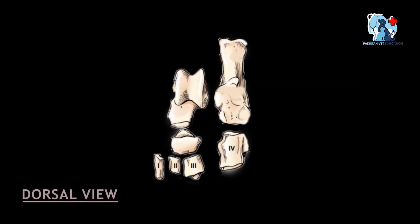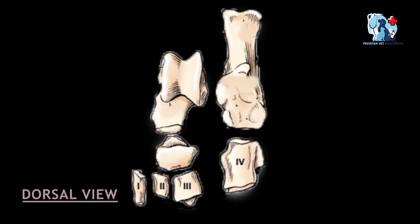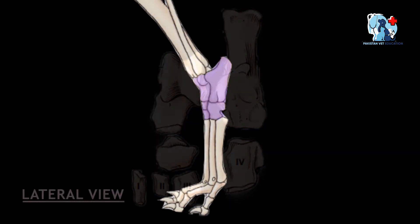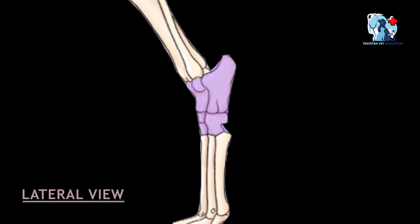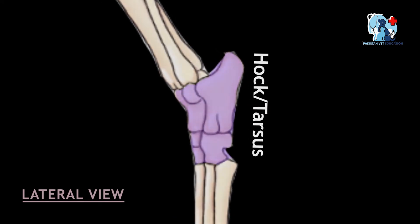The tarsal bones are seven short bones arranged in three irregular rows, and combinedly they form the hock or tarsus region.